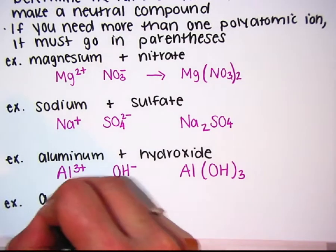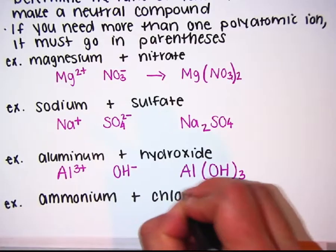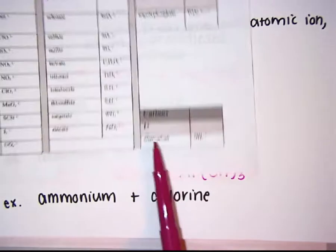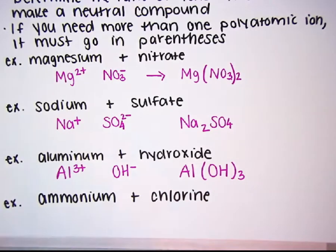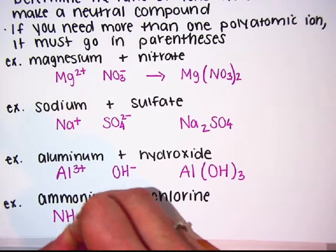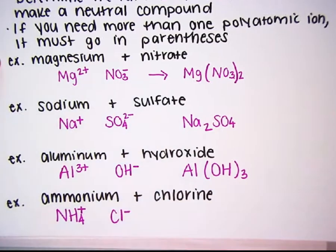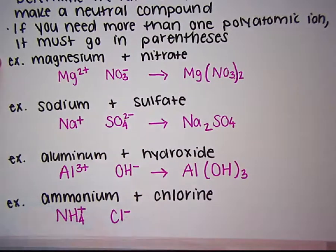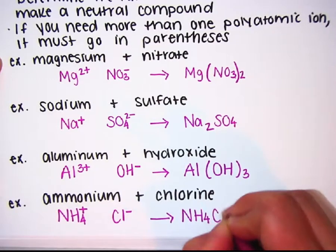Last formula example. So far, all of the polyatomic ions have been negatively charged. There is one cation you should be familiar with: ammonium. Ammonium is NH4 1 plus. Chlorine is just regular chlorine from the periodic table; its charge is minus 1. Plus 1 and minus 1 already equals 0, so the compound is already neutral. The formula would be NH4Cl.